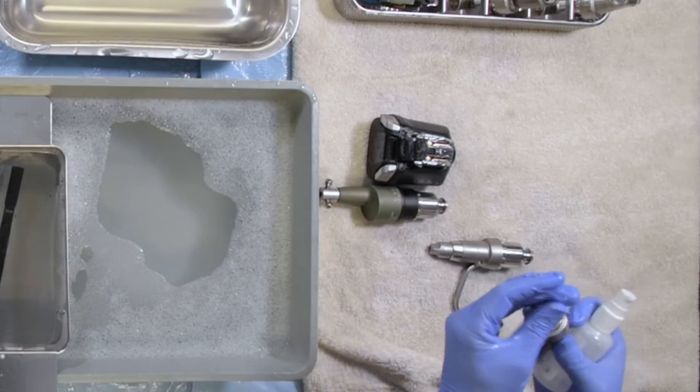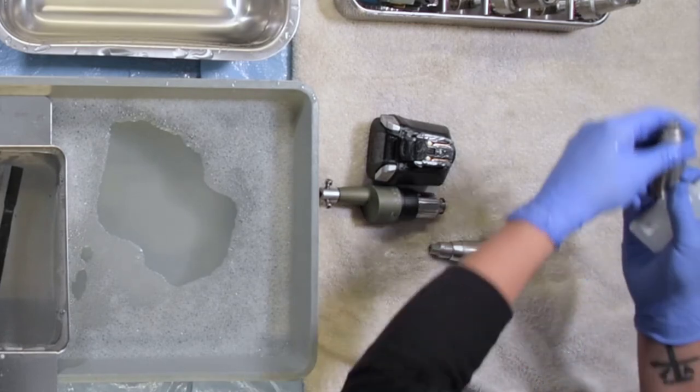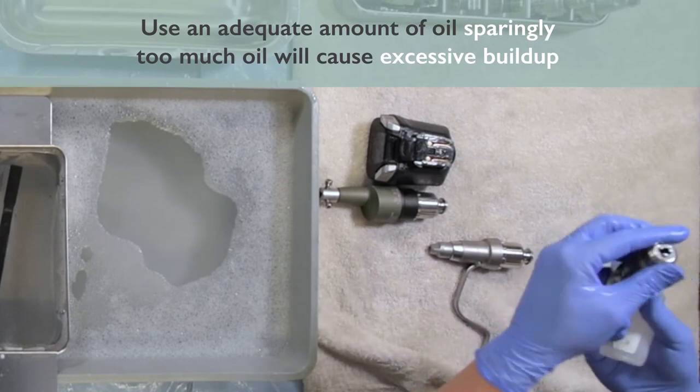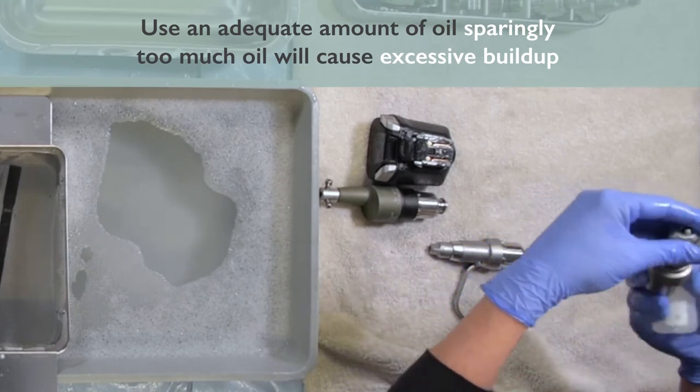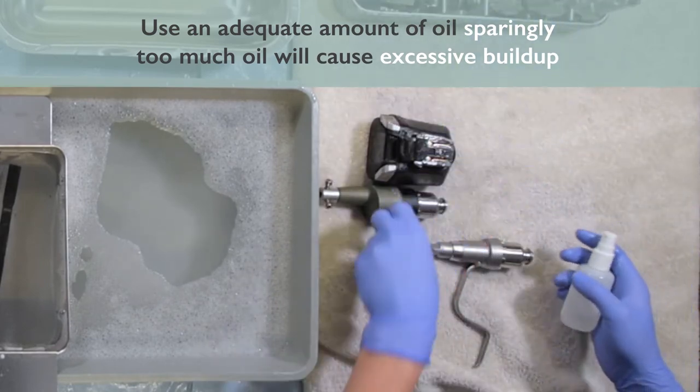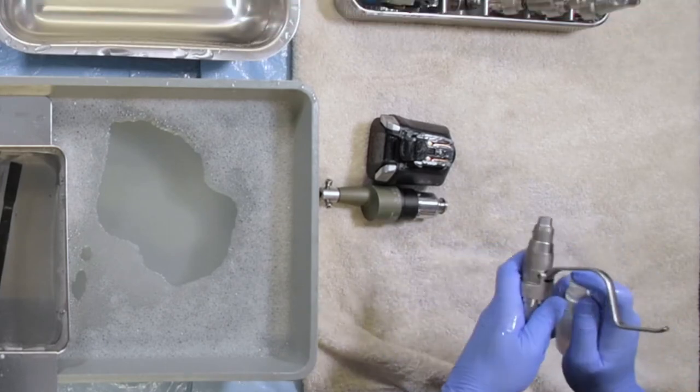On your quick coupling attachment, you can also place just a little bit of oil. Make sure that you use only small amounts and distribute it well, as using a bunch of oil can cause excessive buildup.